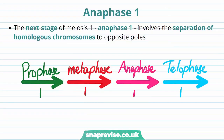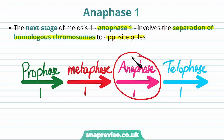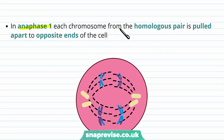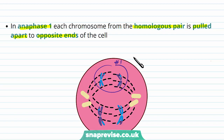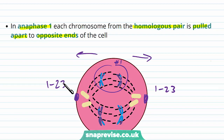The next stage following metaphase 1 is anaphase 1, which involves separating the homologous chromosomes to the opposite poles — again very similar to the third stage of mitosis. Each chromosome from the homologous pair is pulled apart to the opposite ends of the cell. With pairs lined up from 1 to 23, each chromosome from a pair gets pulled to one end, so one pole has one set of chromosomes 1 to 23 and the other pole also has one set of chromosomes 1 to 23. It is really important that they line up with their homologous pair so that each pole ends up with exactly chromosomes 1 to 23.